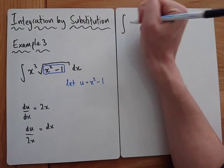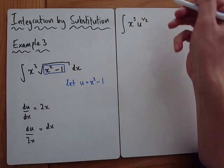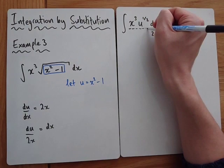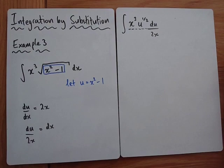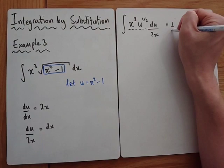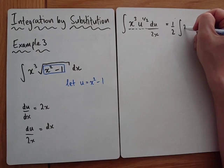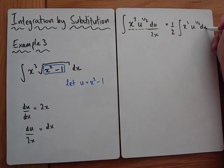Substituting into the integral: we have x cubed, then the square root of u — so u to the half — and dx becomes du over 2x. Now tidying up: the constant 1/2 can be taken outside the integral. Inside, x cubed divided by x leaves x squared. So we have one half times the integral of x squared times u to the half du. But we can't integrate yet — we still have an x term inside.